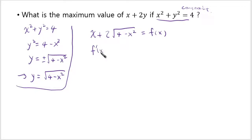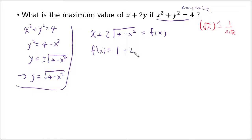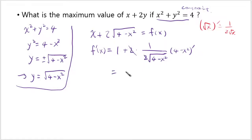That's a little more annoying to differentiate, but it's not impossible. Remember that the derivative of square root of x is 1 over 2 radical x, and using the chain rule, we can differentiate this. Differentiating x gives 1, and then plus 2 times the chain rule applied to the square root: differentiate the outside function, copy the inside, then differentiate the inside. The 2s cancel, and we get f prime of x equals 1 plus 1 over square root of 4 minus x squared times negative 2x.